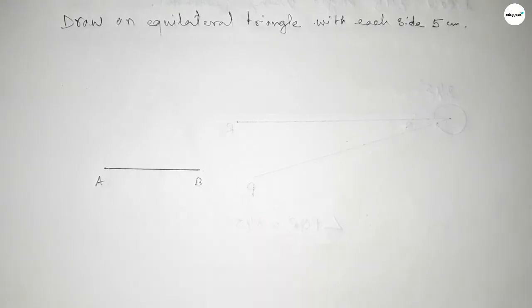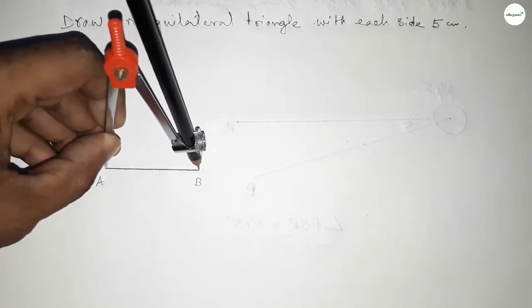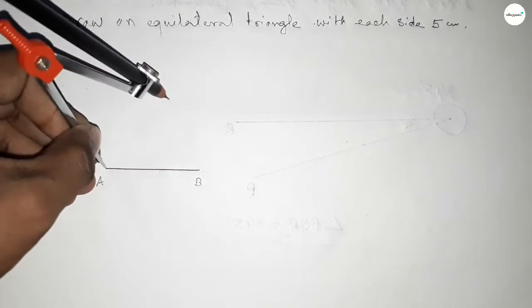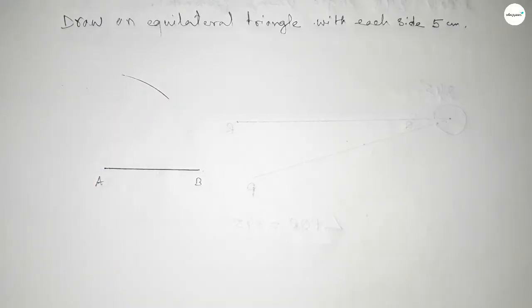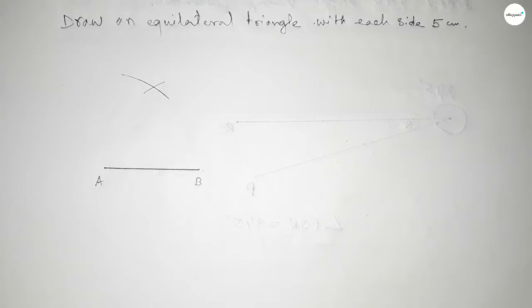Now taking the length AB by compass this way and drawing an arc here with the same length, putting the compass here and cut here, so both arcs intersect at a point.